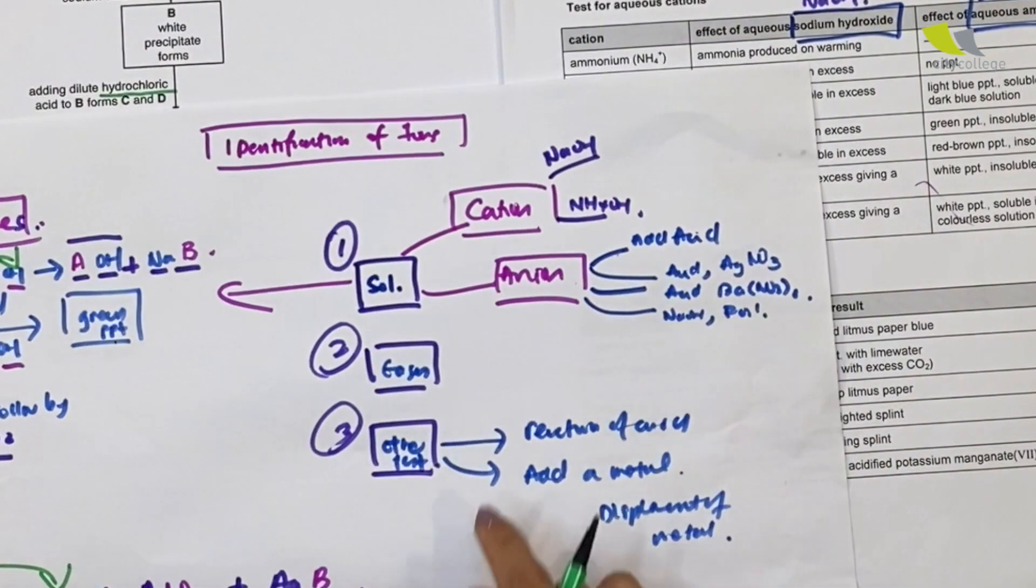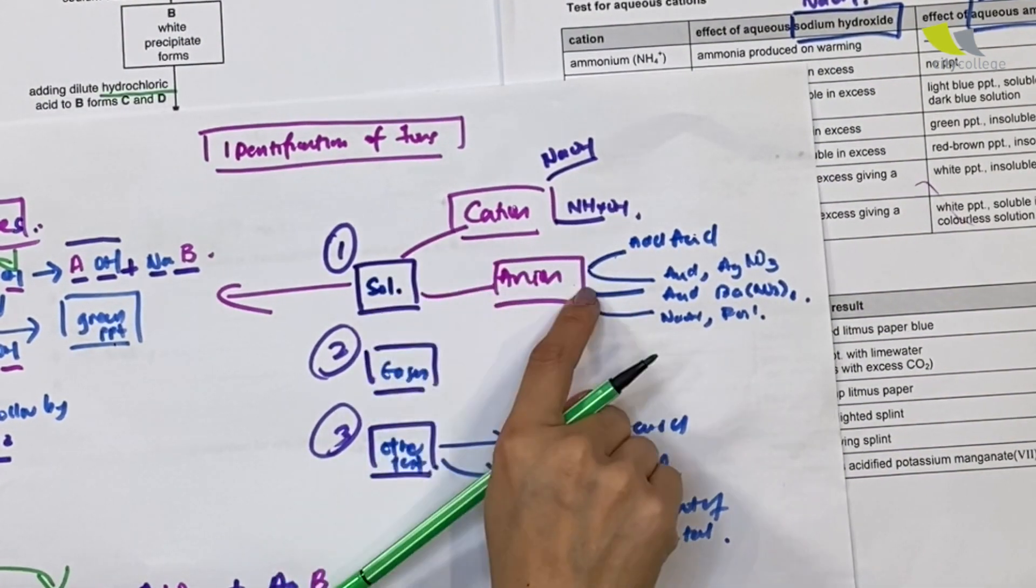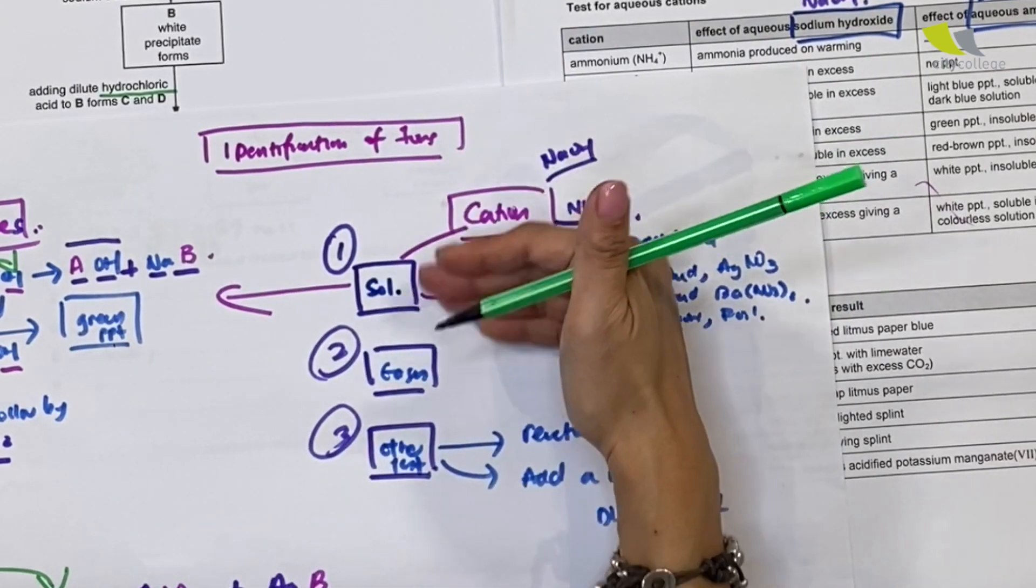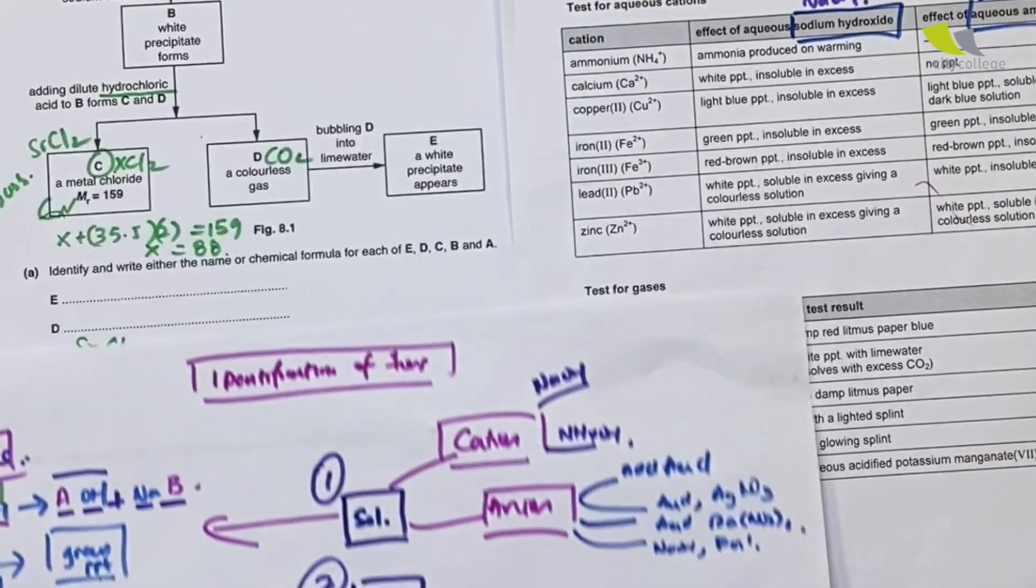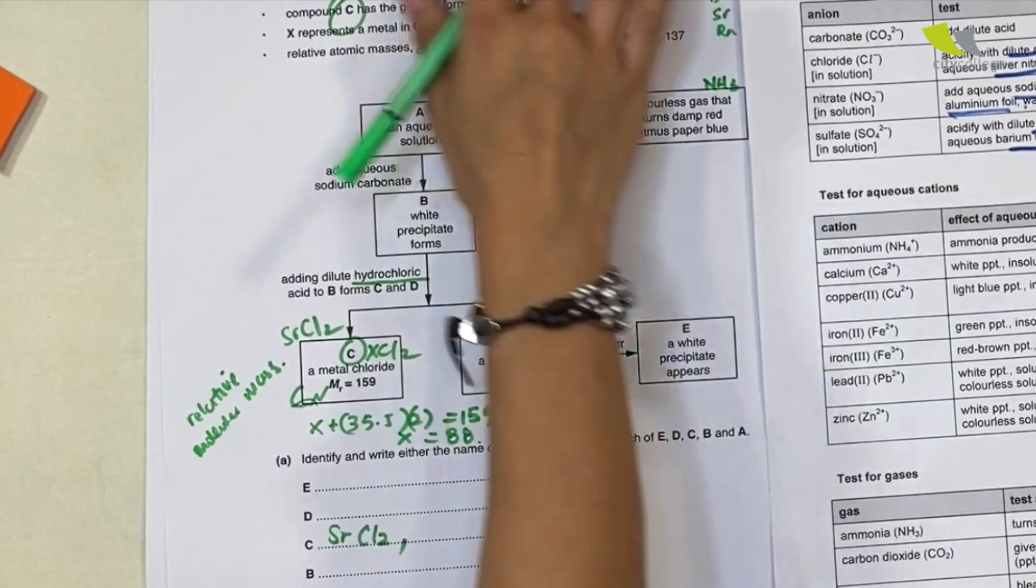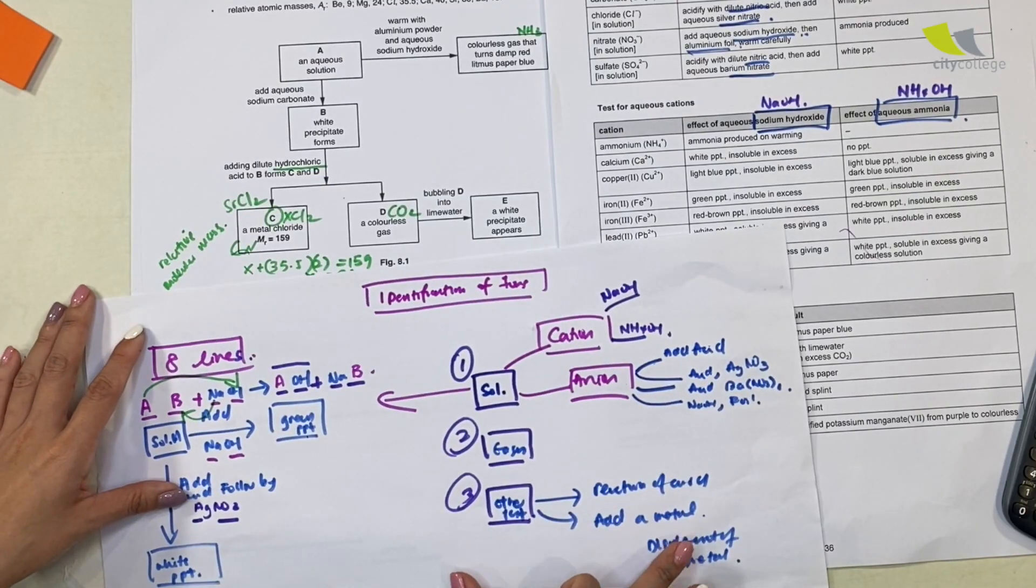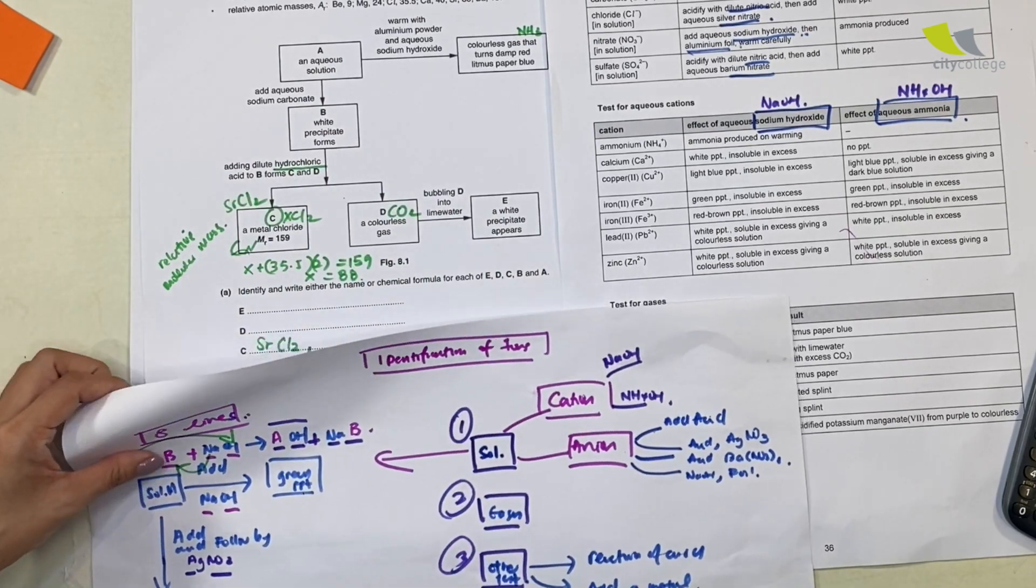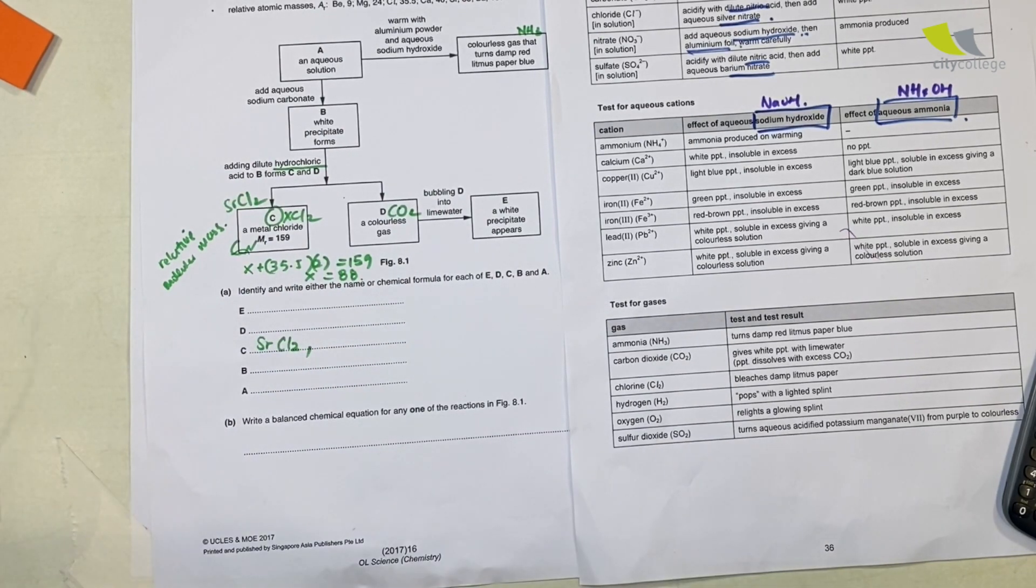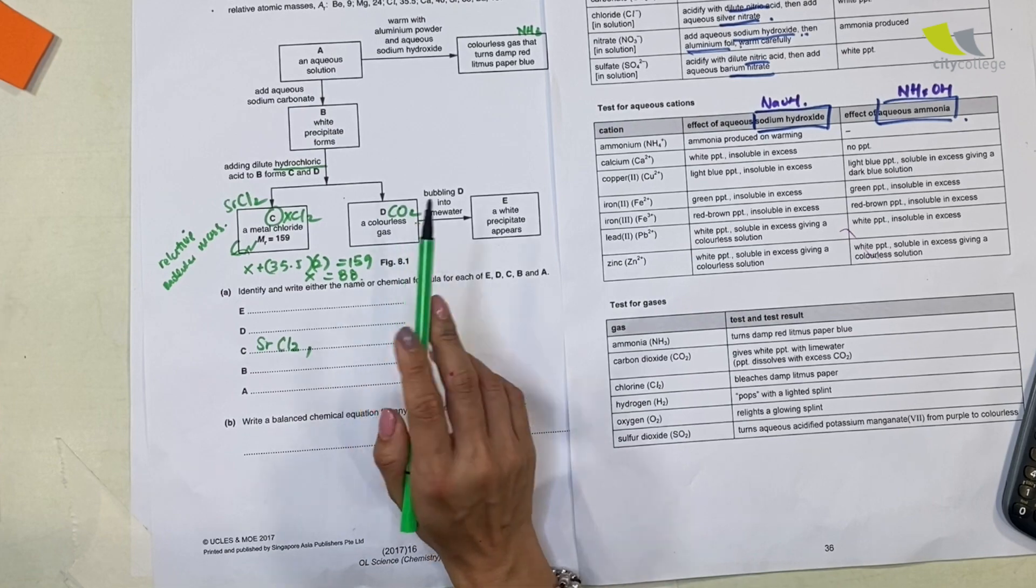If a gas bubbles into lime water giving you a white precipitate, obviously the lime water test is actually for carbon dioxide. Immediately I know that this is carbon dioxide. So as I mentioned first, we look for the solution to get your cation and anion. If this doesn't work and doesn't give you a lot of clues, I move on to gases.